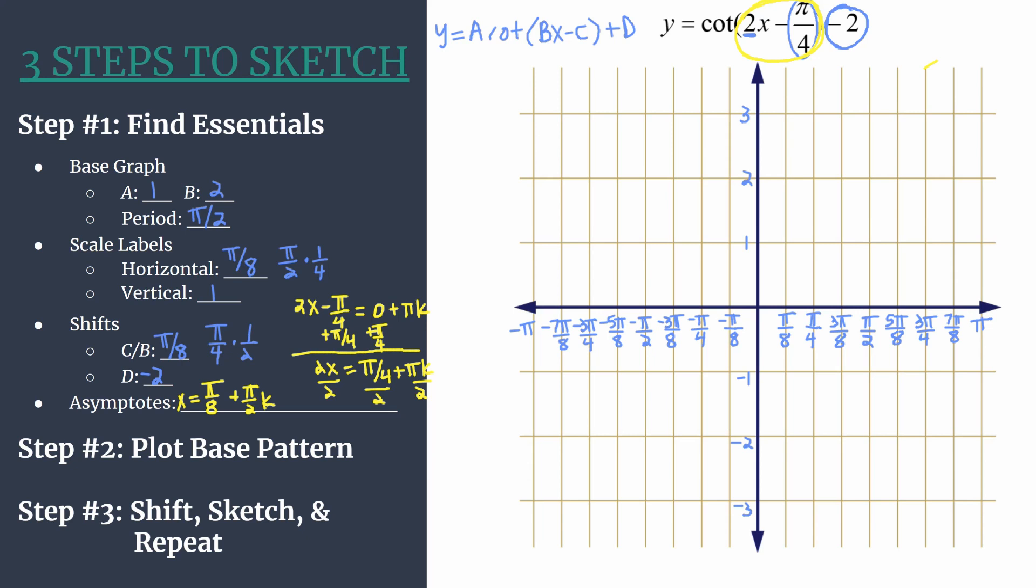Plug in a few values for k here. It'll help you know where your asymptotes are supposed to fall for your final graph. When k is 0, that's a pretty easy one. We should have an asymptote at π over 8. Let k equal 1, and when you simplify and combine, just get a little common denominator there, you'll see you should have another asymptote at 5 π over 8. Let k equal negative 1. Same thing, common denominator, simplify. We should have another asymptote happening at negative 3 π over 8. So this is a great way to quickly find the asymptotes for an equation of cotangent. And it also is great because as you're graphing at the end, you know where these asymptotes should be.